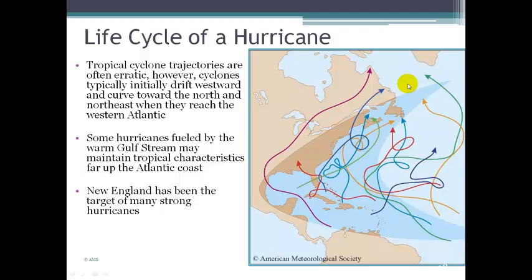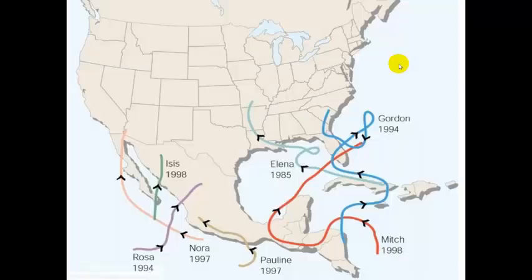Some hurricanes are fueled by the warm Gulf Stream, which means they can stay warm and tropical as they make their way further north. So New England, which is not really in the hurricane formation area, receives the brunt of a lot of strong hurricanes because of these erratic paths.